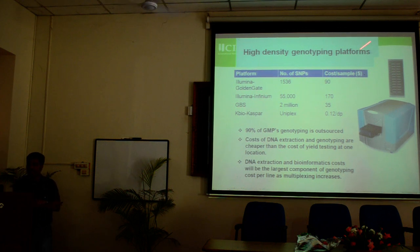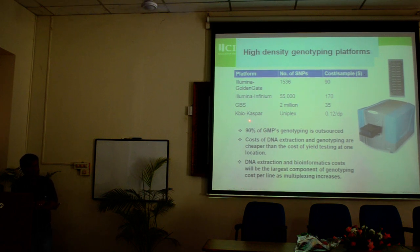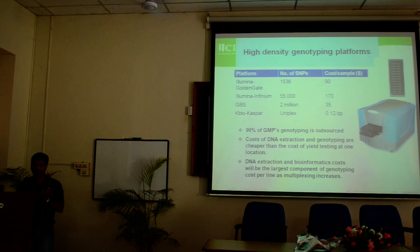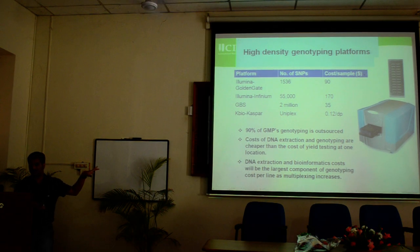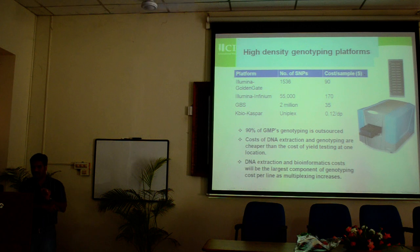Another platform is the Infinium platform, also from Illumina, which contains 55,000 SNPs. Then there is GBS — genotyping by sequencing — which gives about 2 million data points per sample. And there is another platform from KBiosciences, a company in the UK, called Kaspar Chemistry. The beauty of this system is that it assays one SNP at a time — so if you want to assay a population for only 200 selected markers and don't want 2 million markers, you don't have to waste money on the larger platforms. You can pick and choose your markers. The cost is around 10 to 12 cents per data point.